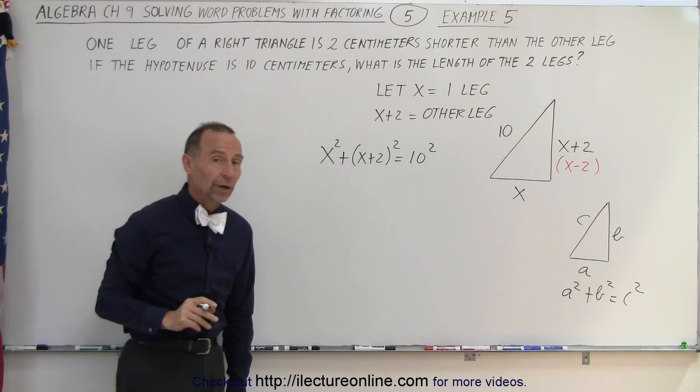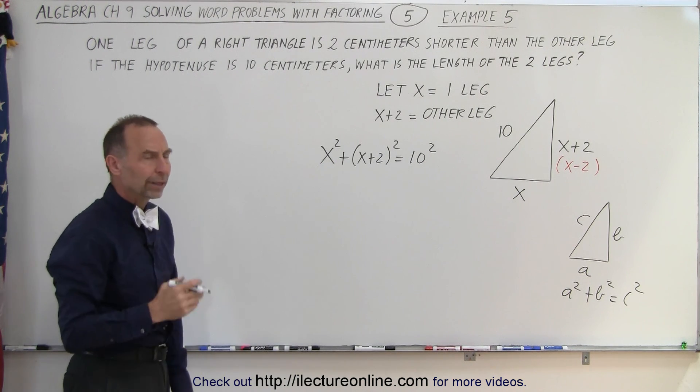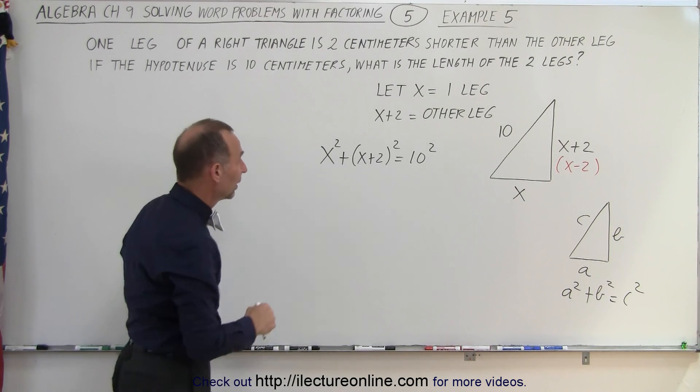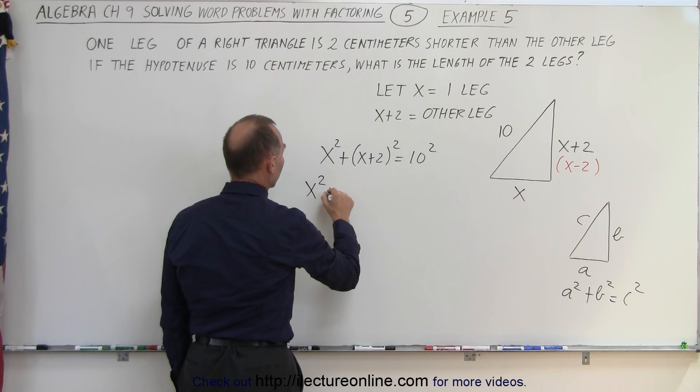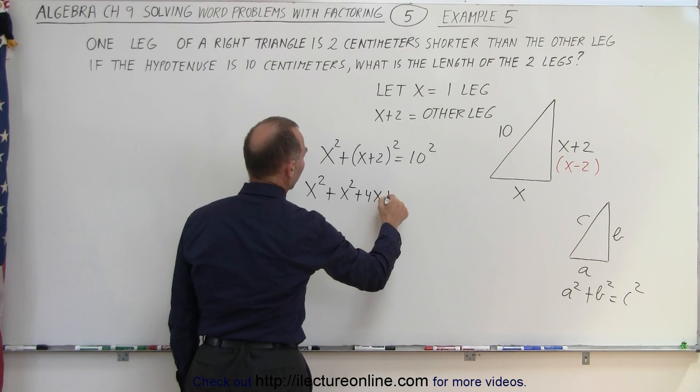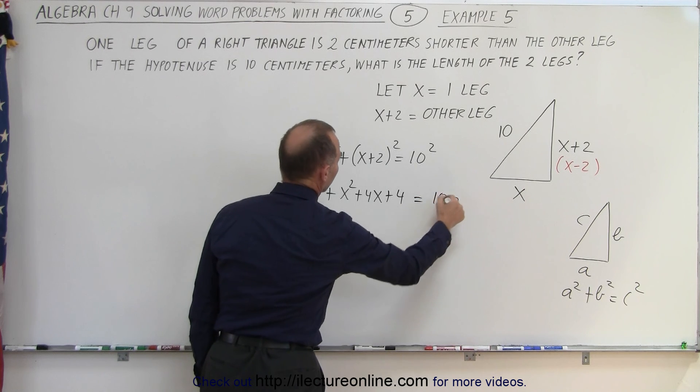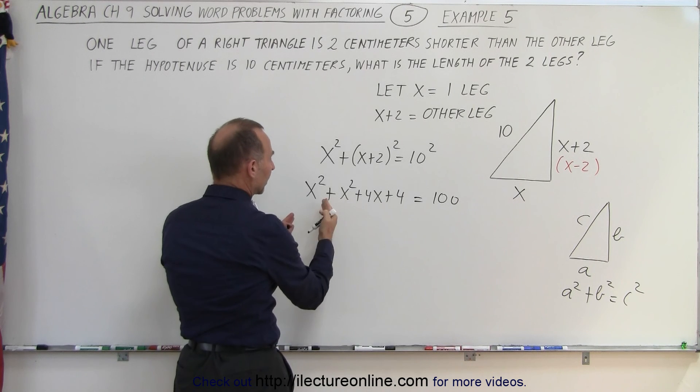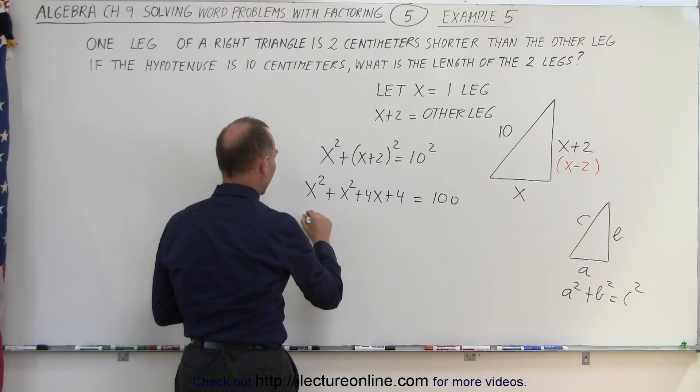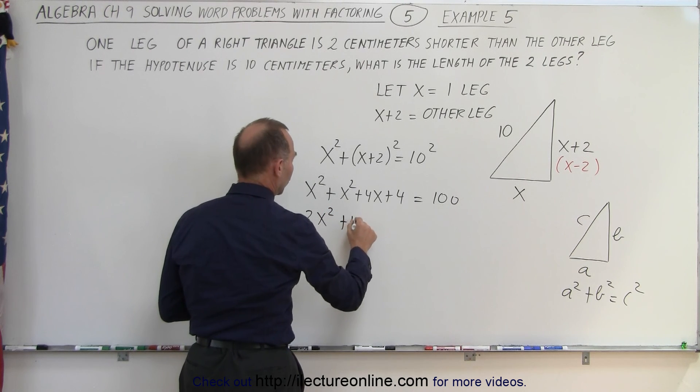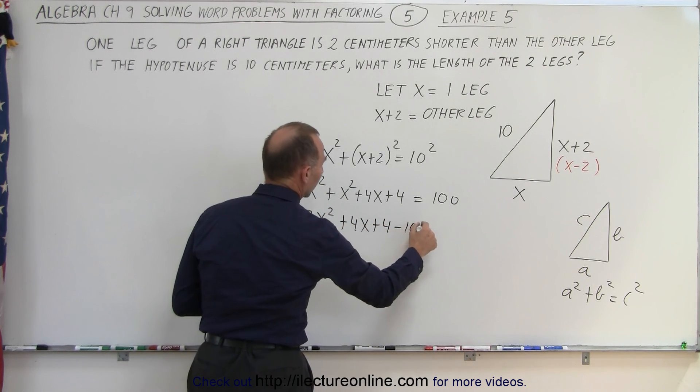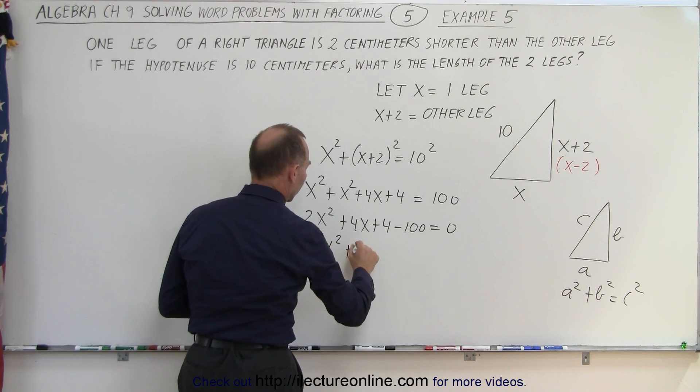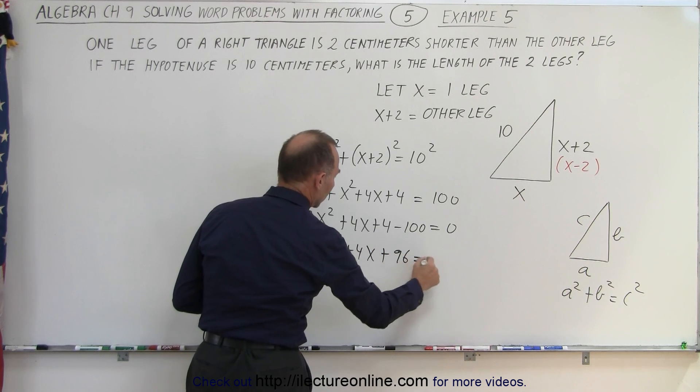Now we're going to solve this quadratic equation to find the right solution. Then we'll do it again with x minus two and see we should get the exact same result. This becomes x squared plus x squared plus 4x plus 4 equals 100. When we multiply this out we get x squared plus 4x plus 4. Now let's combine like terms and move the hundred across so we have 2x squared plus 4x plus 4 minus 100 equals zero. Combining these we get 2x squared plus 4x minus 96 equals zero.